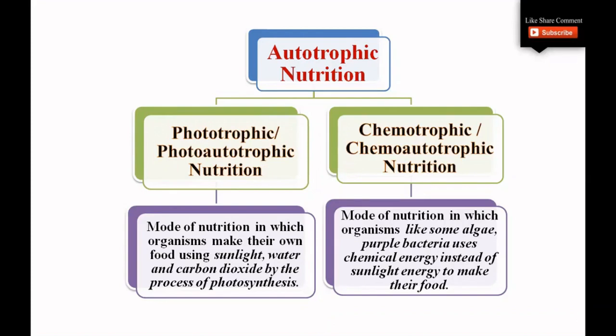Photo-autotrophs use photosynthesis as a source of energy — examples are plants and green bacteria. Chemo-autotrophs use chemosynthesis as a source of energy — examples are algae and non-green sulfur bacteria.